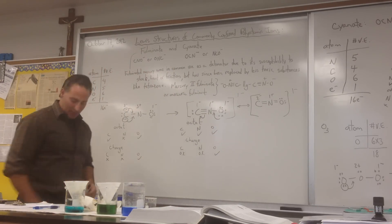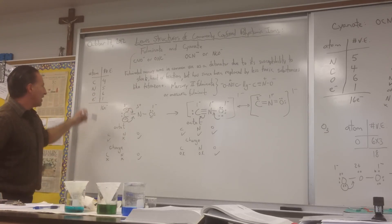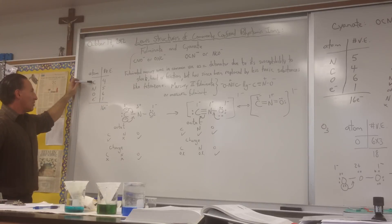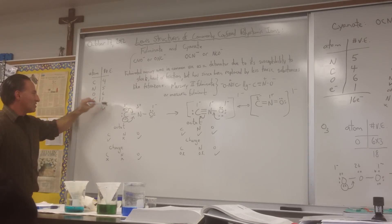To draw the Lewis structure of fulminate, we begin by doing the counting of how many electrons there are in the molecules. Carbon atom, nitrogen atom, an oxygen atom, and an extra electron for the minus charge. Carbon likes to have 4 valence electrons, nitrogen likes to have 5, oxygen likes to have 6 valence electrons, and the extra 1 electron for the minus charge gives you 16 electrons that have to be accounted for.